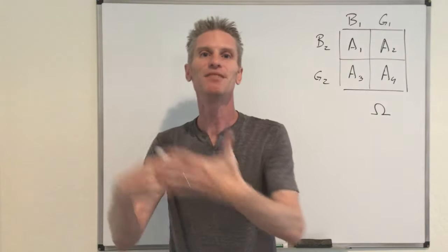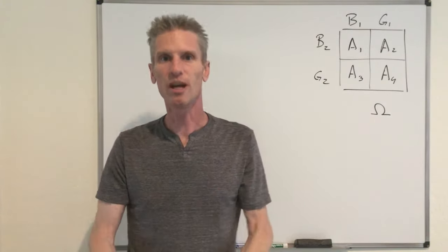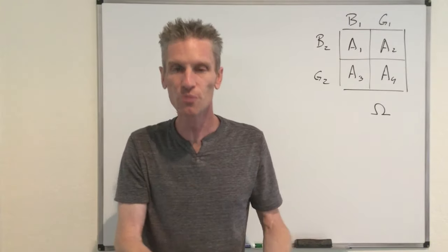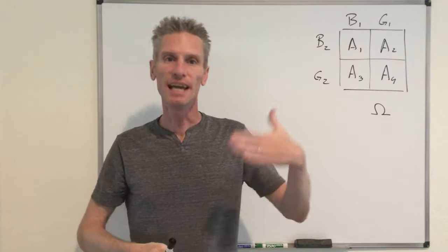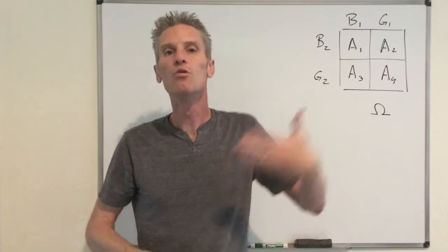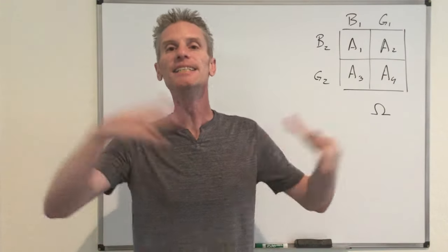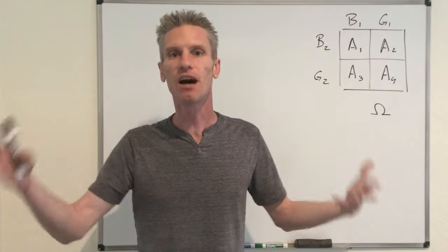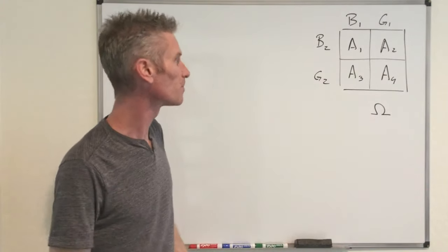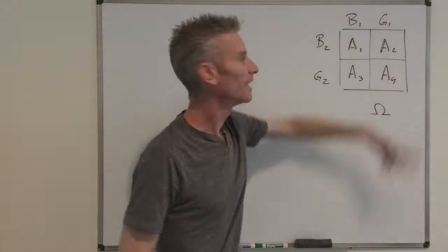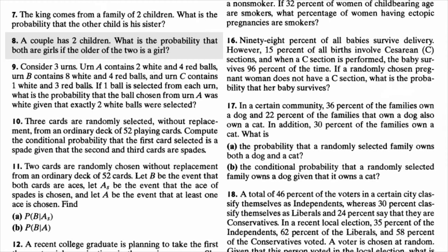Even if it's not specified in the problem, we also assume that each kid is going to be a boy or a girl with probability one half, independently of the sex of the sibling. That's a natural assumption. So now let's go back to problem number 3.8.